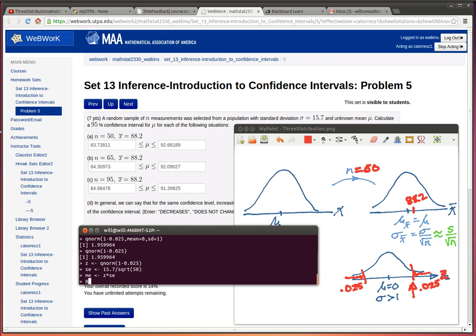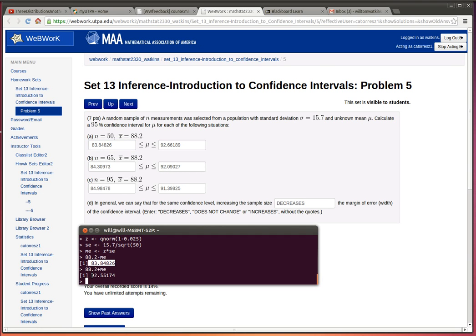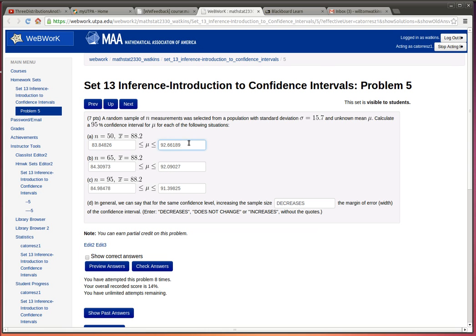Now we can build our confidence interval: 88.2 minus the margin of error, 88.2 plus the margin of error. So there's our lower bound right there, let's copy that and put that in here. And there's our upper bound in this case, put that in here, and let's check our answers.